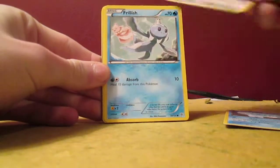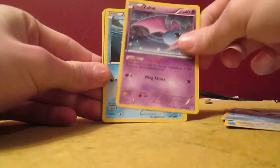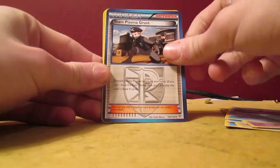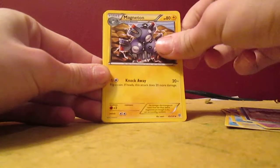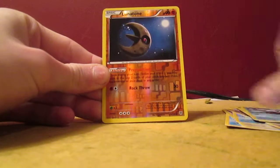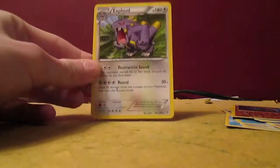We got a Kecleon, Rufflet, Frillish, Zubat, Carvanha, Team Plasma Grunt, Magneton, Vanillish, Lunatone reverse, and Electrode.